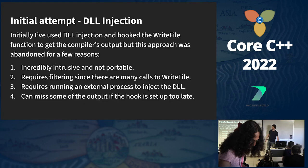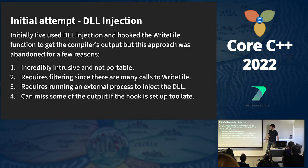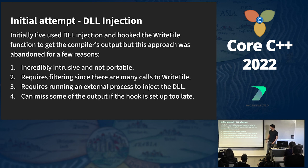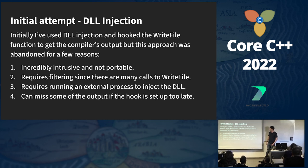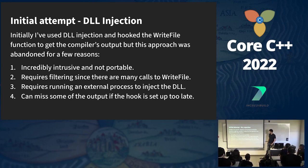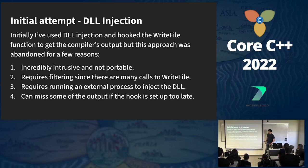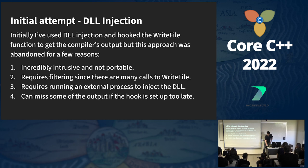Now we need a way to get the output of the compiler. First, I tried doing it by using DLL injection and hooking the write-file function, but this approach was abandoned: it is incredibly intrusive and not portable, it requires filtering since there are many calls to write-file, it requires running an external process to inject the DLL, and it can miss some output if the hook is set up too late.